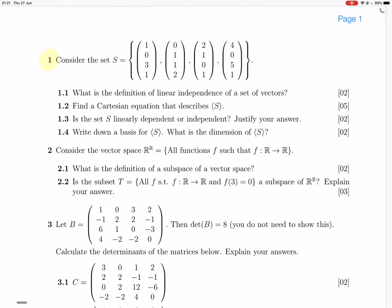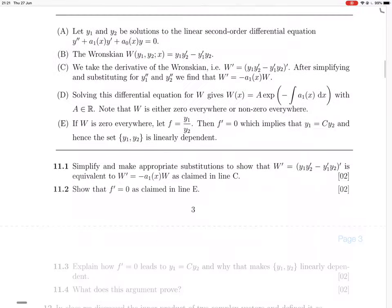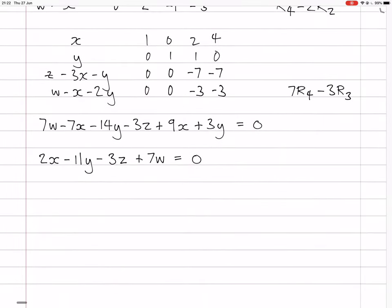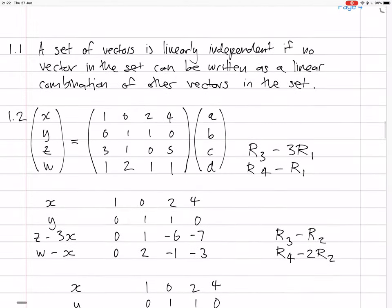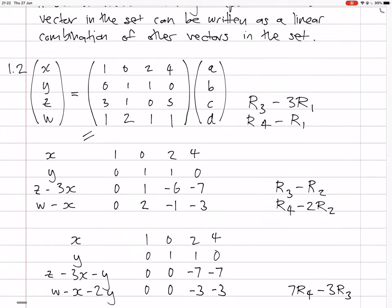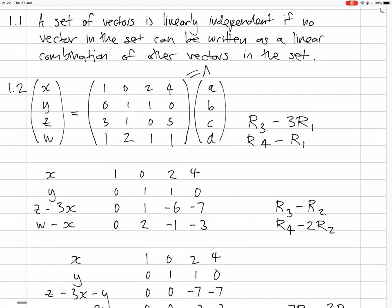Now on to 1.3. Is the set S dependent or independent? Well, it's definitely dependent because there's many possible answers. One way we know it's dependent is that... The next question is asking for us for a basis and then saying what is the dimension. So let's not use the dimension to say why it's dependent. So let's say it's dependent because there's three variables in this Gauss reduction because there's a row of zeros. So I'm just going to call this matrix A.